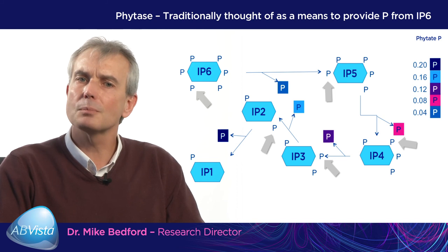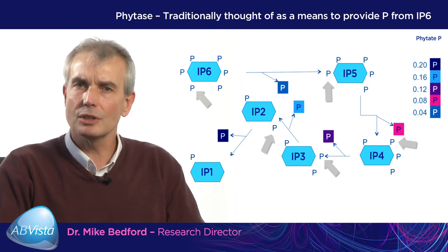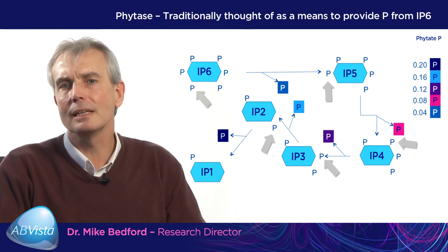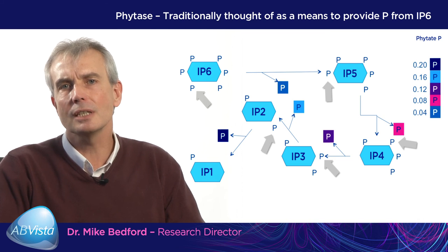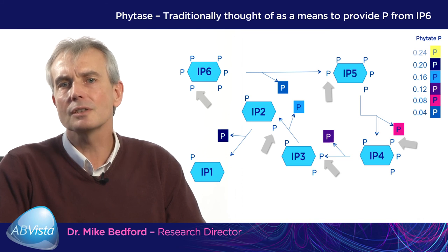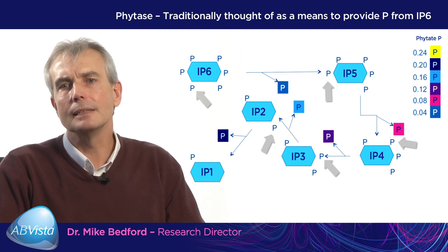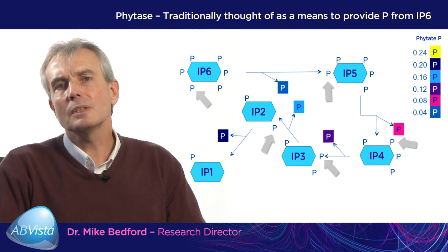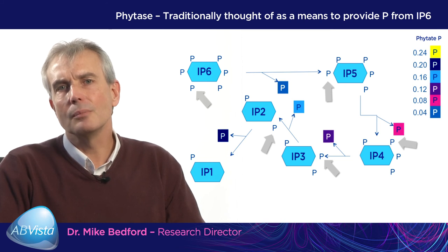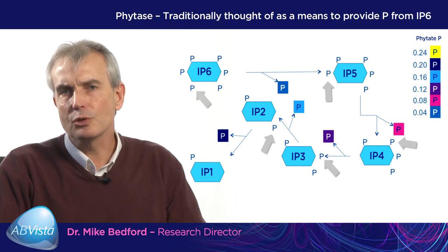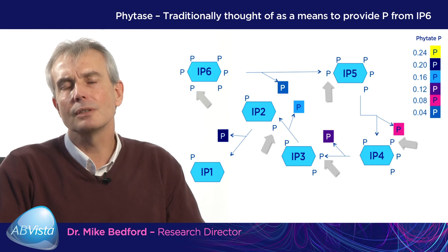No phytase breaks down IP1, but fortunately alkaline phosphatase in the gut is a very rapid enzyme and it will digest IP1 producing inositol and the final phosphate very rapidly indeed. So what we see there is the six phosphates have been removed, five of them by phytase and one by alkaline phosphatase. That is how people have traditionally thought of using phytases.